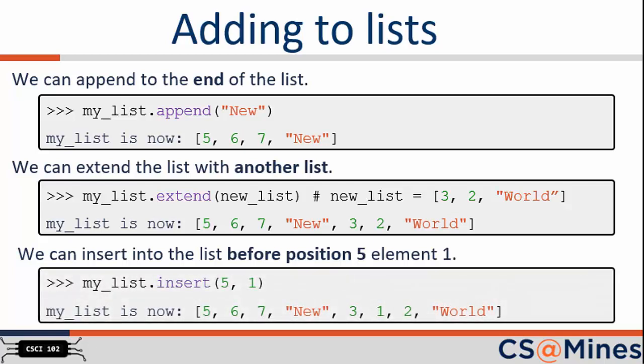And finally, we can insert an element into an existing list. In this case, the first argument is the index in the list where you would like to add an element, and the second argument is the value you would like to add. So in this case, the value 1 is placed at the index 5, and the other elements in the list are placed following the new value added.